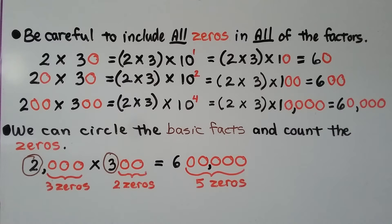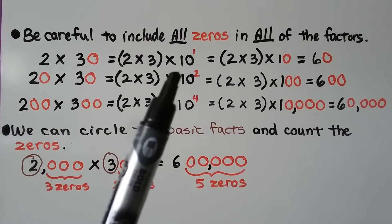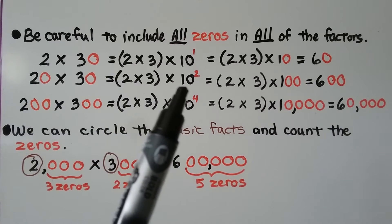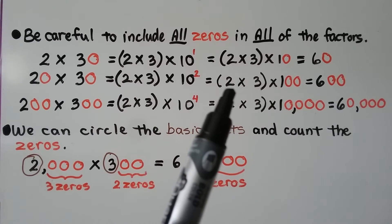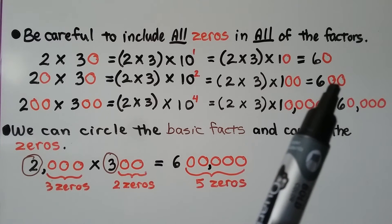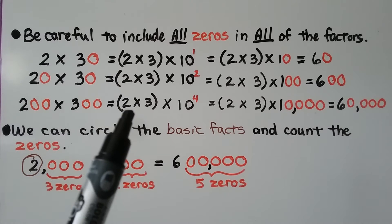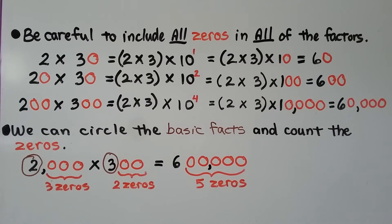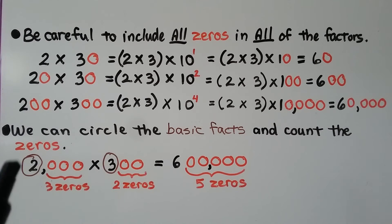Be careful to include all zeros in all of the factors. 2 times 30 equals 2 times 3 times 10 to the first power, which equals 60. And 20 times 30 equals 2 times 3 times 10 to the second power — two zeros — which equals 600. And 200 times 300 equals 2 times 3 times 10 to the fourth power, which is 2 times 3 times 10,000, equaling 60,000. We can circle the basic facts and count the zeros: 2,000 times 300 has basic facts 2 times 3, with five zeros, giving 600,000.